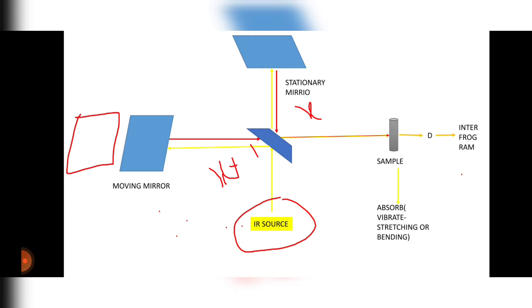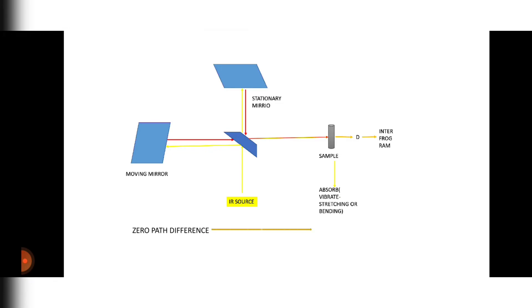Now the intensity will become destructive. If the path difference is zero, then constructive interference will form. If the optical path difference is there, if it is moving far or if it is moving near, the interference will be destructive interference.